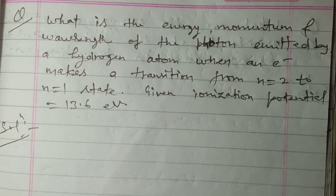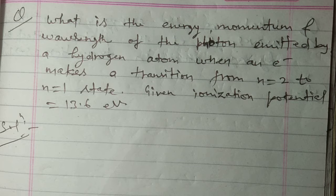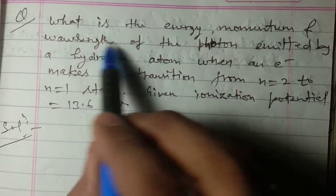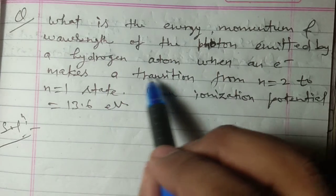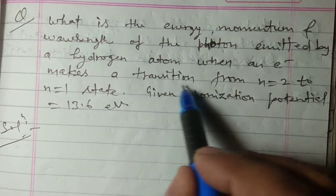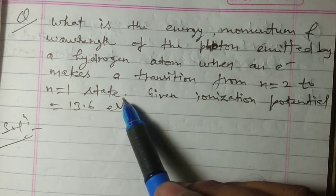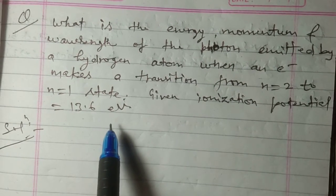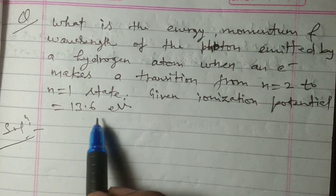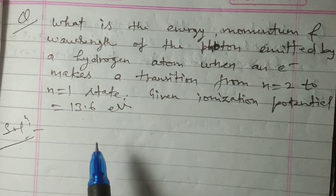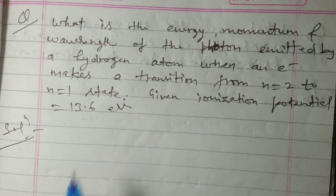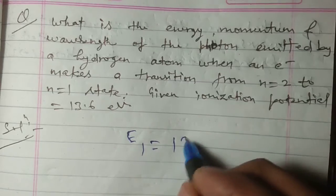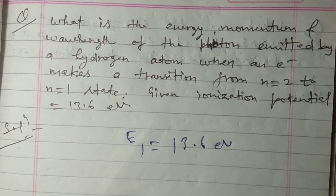Hello everyone, welcome to my channel Learning Institute. Today I am going to discuss a question asked by one of the students. The question is: what is the energy, momentum, and wavelength of the photon emitted by a hydrogen atom when an electron makes a transition from n equal to 2 to n equal to 1 state? The given ionization energy is 13.6 electron volt, so the energy of the electron in the first orbit of hydrogen is minus 13.6 electron volt, written as E1 equal to minus 13.6 eV.